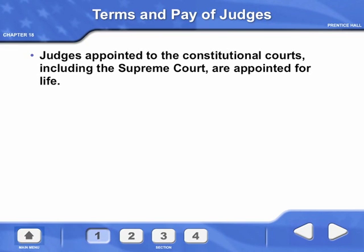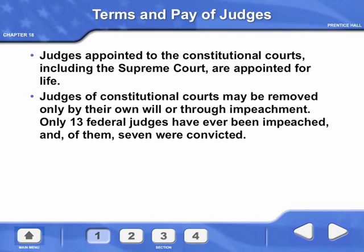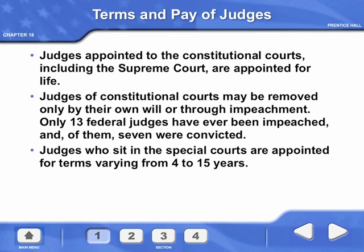Judges appointed to the Constitutional Courts, including the Supreme Court, are appointed for life. Judges of Constitutional Courts may be removed only by their own will or through impeachment. Only 13 federal judges have ever been impeached, and of them, 7 were convicted. Judges who sit in the special courts are appointed for terms varying from 4 to 15 years.